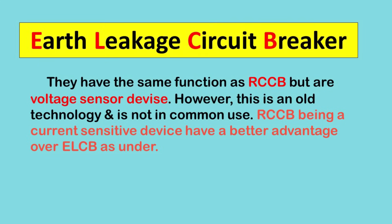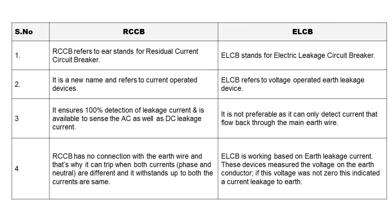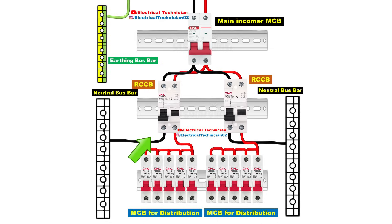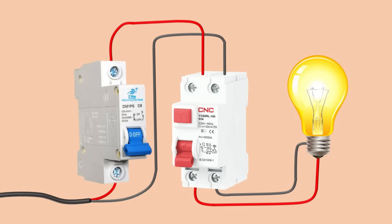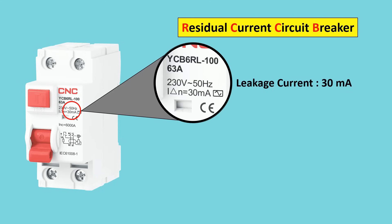If you go to market to buy an ELCB, you may not find it. Right now, you can only find RCCB in the market, which is more sensitive than ELCB. Also, when you go for installation of RCCB, the leakage current of RCCB must be 30mA.